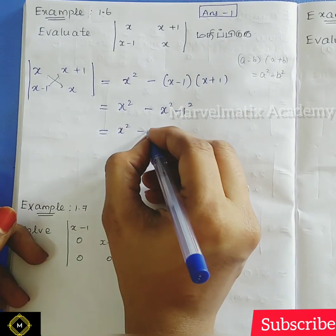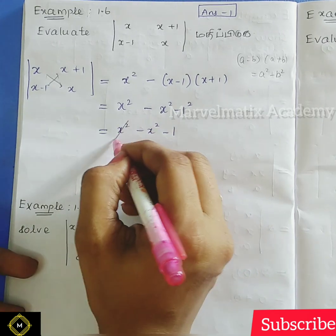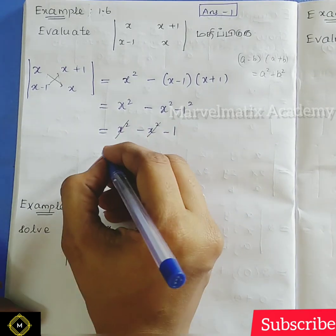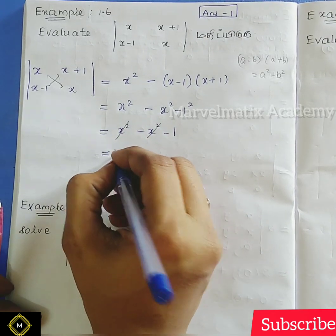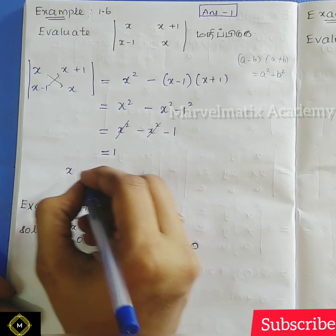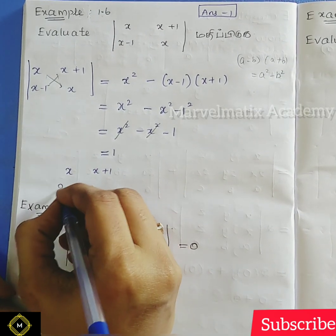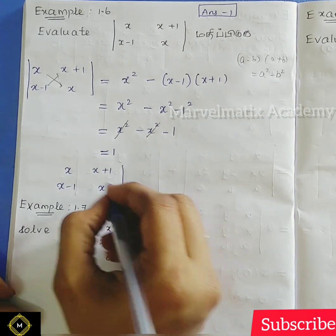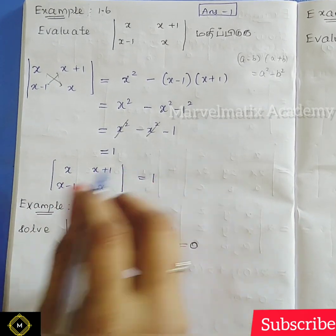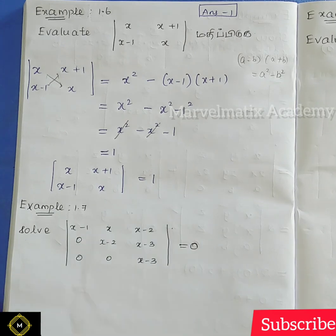1 squared is nothing but 1. So x squared minus x squared gives 0, and 0 minus negative 1 gives the final value equal to 1. So the determinant of x, x+1, x-1, x is equal to 1. Final answer: box it.